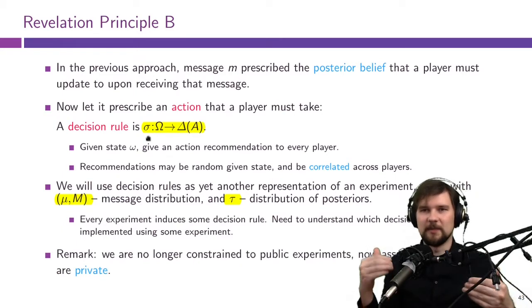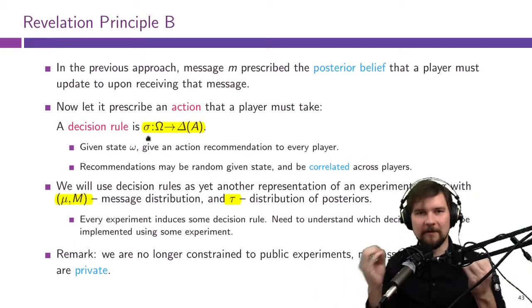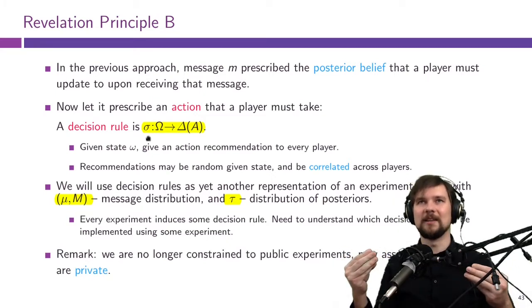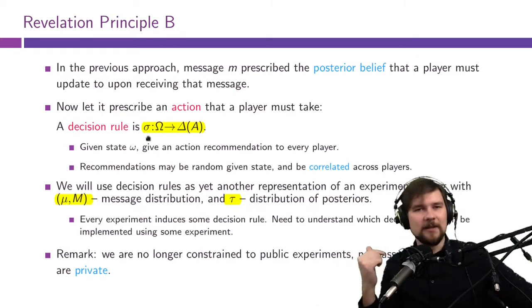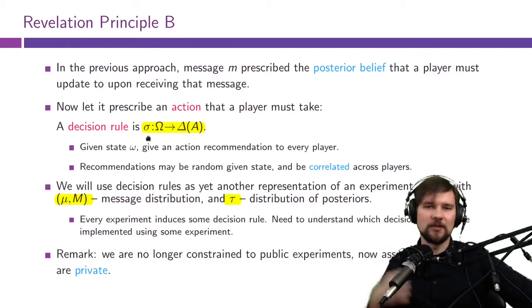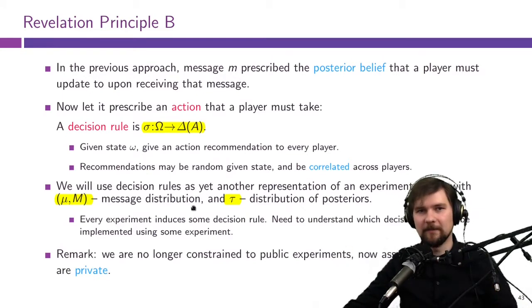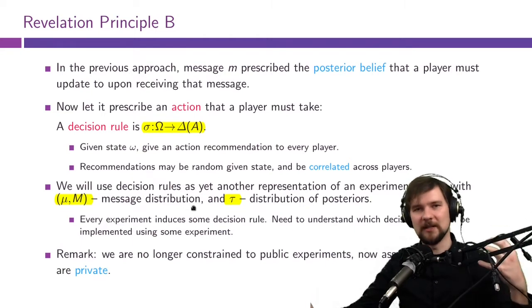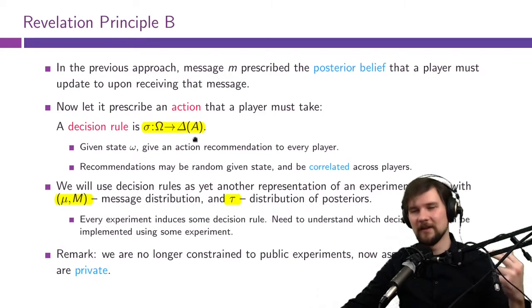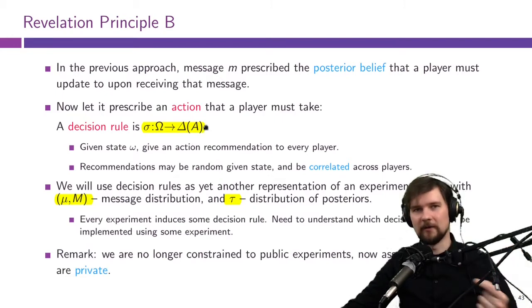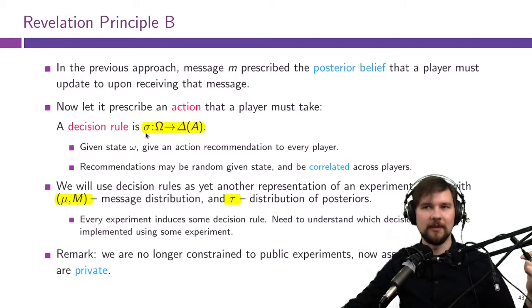What we mean by representing an experiment by a decision rule is: instead of providing information explicitly, we just tell players what they should do. Consider the example of going to the beach — if it's sunny I want to go, if it's rainy I don't. With Revelation Principle 1, the experiment could simply tell me whether it is sunny or rainy. Now instead, the experiment just tells me 'it's good weather for going to the beach' or 'you should not go to the beach.' That's a decision rule.